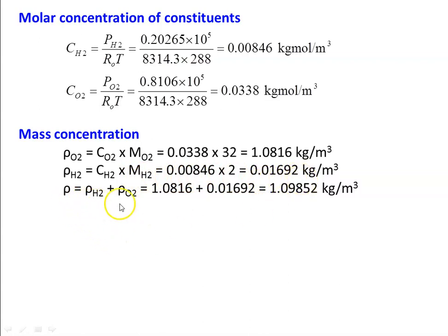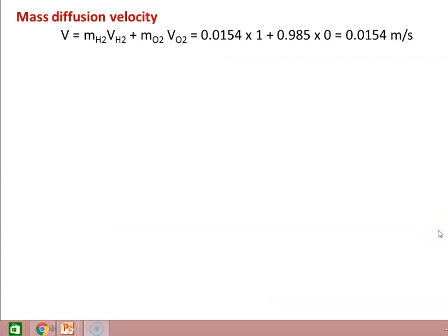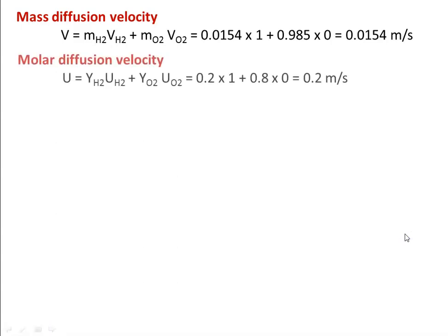Total density = ρH2 + ρO2 = 1.09852 kg/m³. Mass fraction: MH2 = ρH2/ρ = 0.0154. MO2 = ρO2/ρ = 0.985. Mass average velocity: V = MH2·VH2 + MO2·VO2 = 0.0154 × 1 + 0.985 × 0 = 0.0154 m/s. Molar average velocity: U = YH2·UH2 + YO2·UO2 = 0.2 × 1 + 0.8 × 0 = 0.2 m/s.